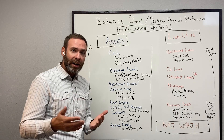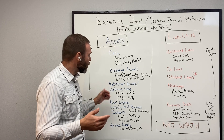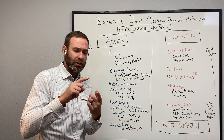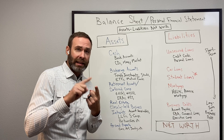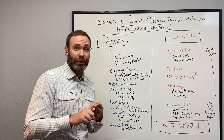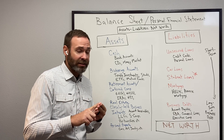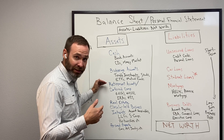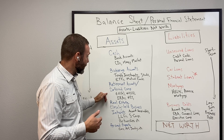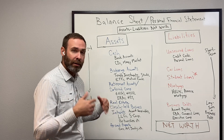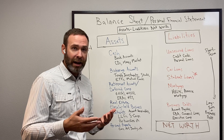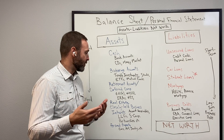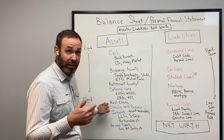Next is retirement accounts. While many retirement accounts can be liquidated to cash, there are usually going to be taxes and potentially early withdrawal fees to access those funds, so it is much harder to liquidate them. That includes a 401k, 403b, your IRAs, and even deferred compensation plans like 457b plans.